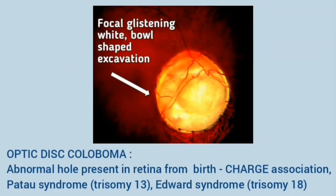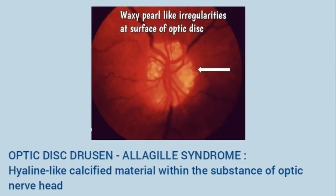This is optic disc coloboma — an abnormal hole present in the retina from birth. There is a focal glistening white bowl-shaped excavation, and the normal optic disc structure is present in a wedge-shaped area in the superior zone. It is usually present in CHARGE association, trisomy 13, and trisomy 18.